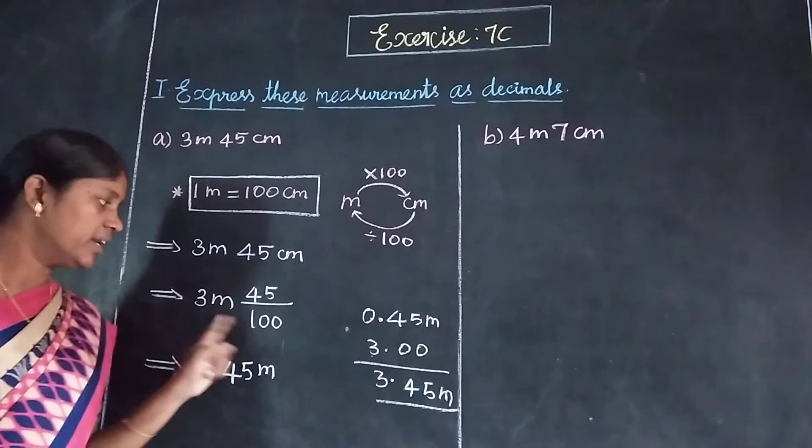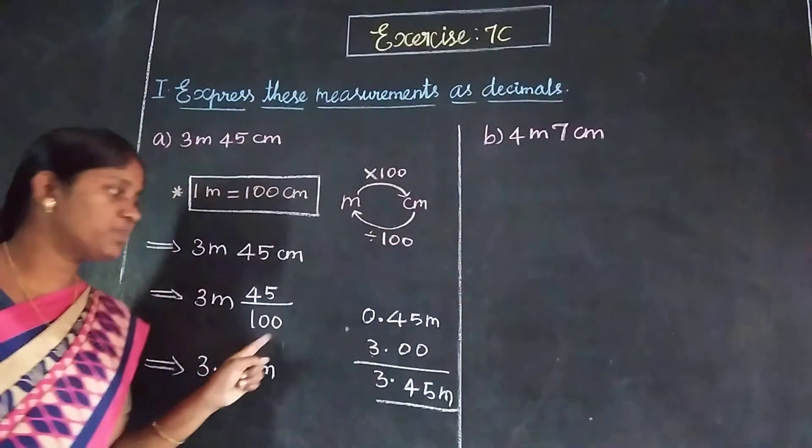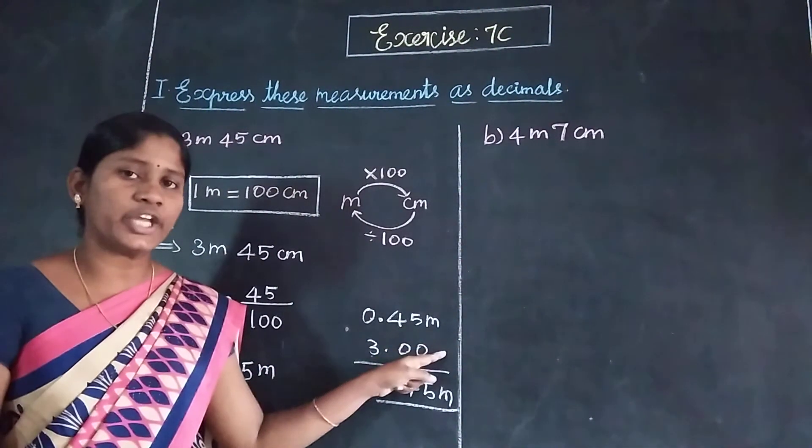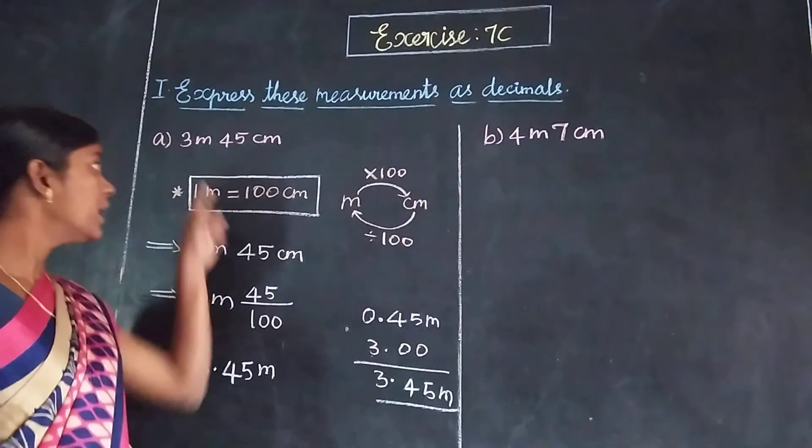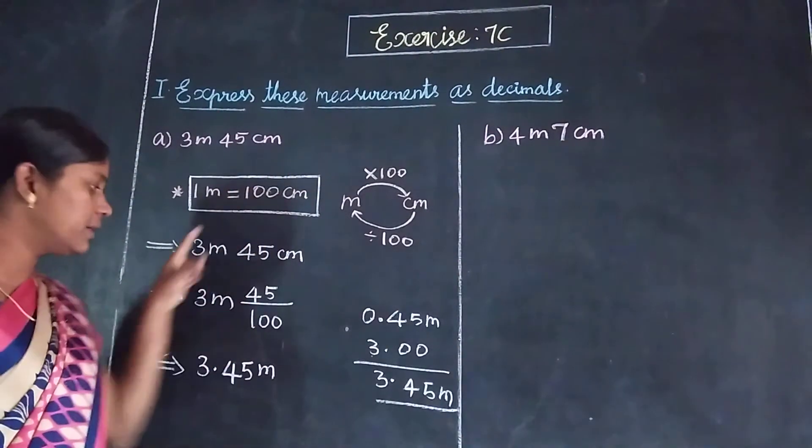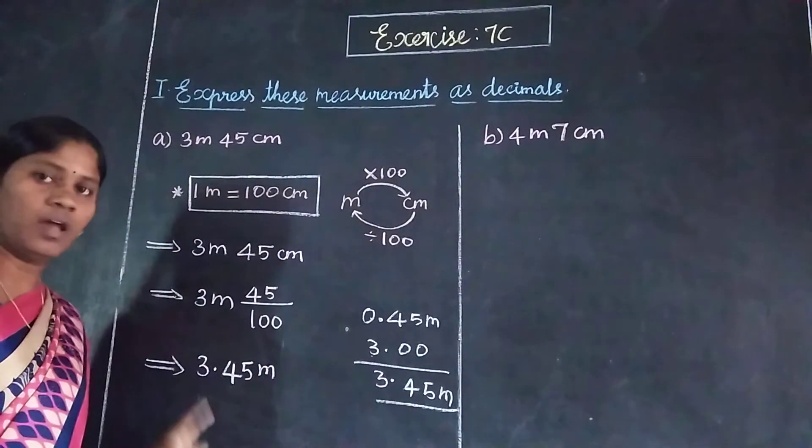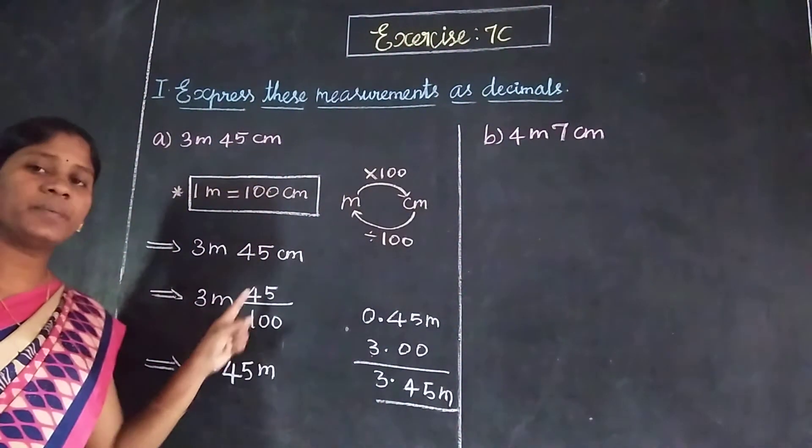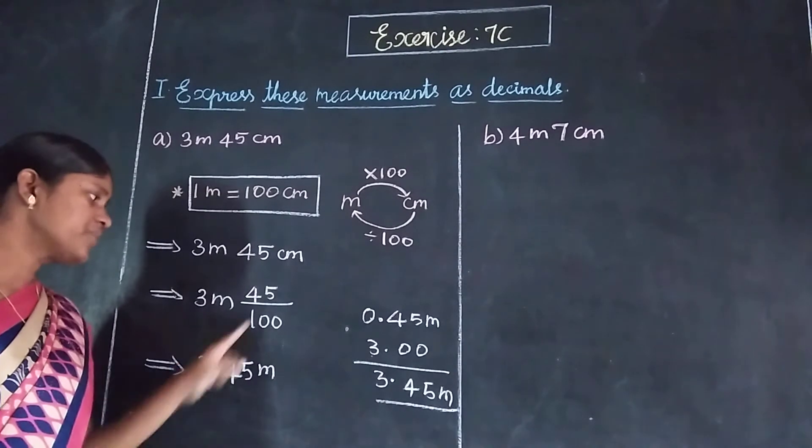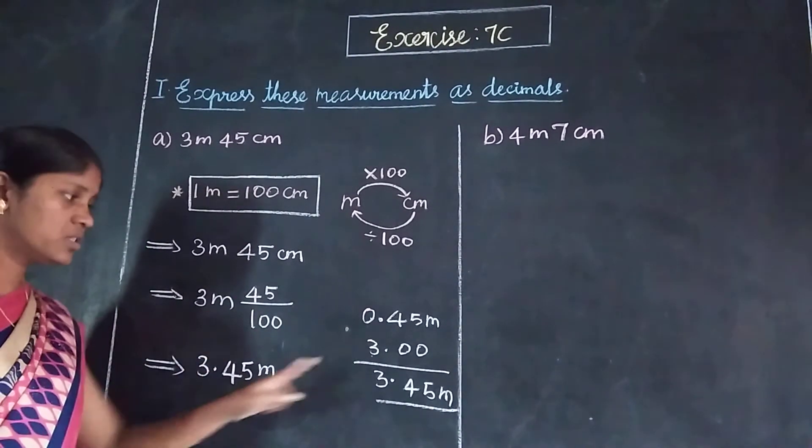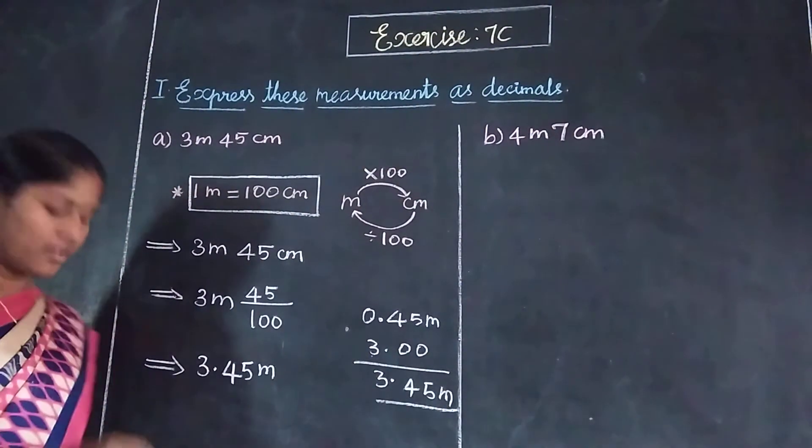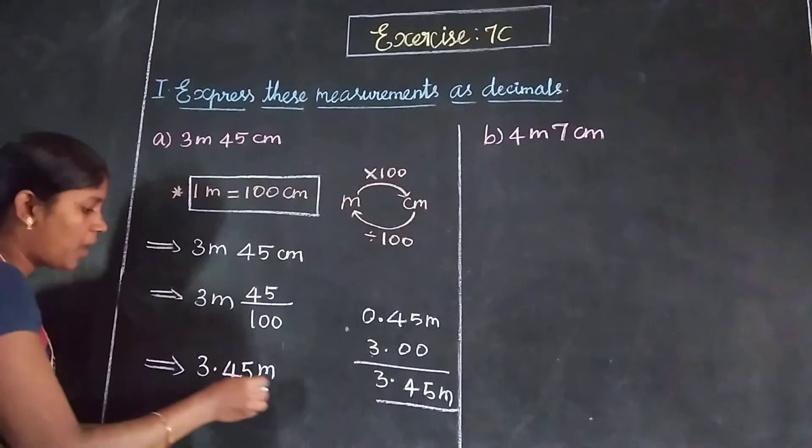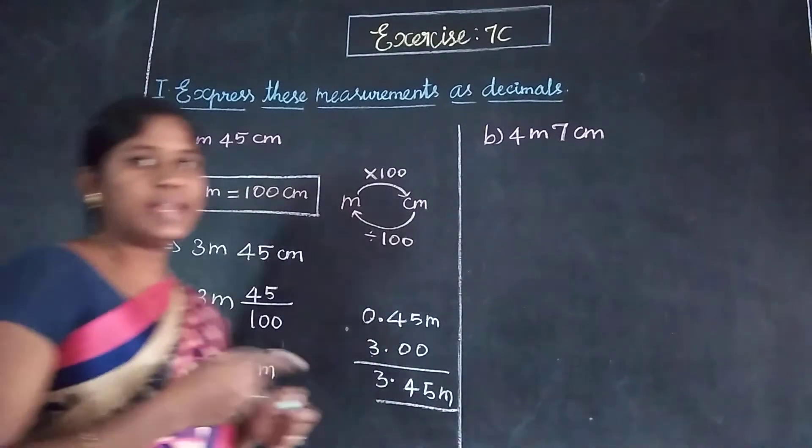3.45 meters is the answer. So 3 meters, then 45 divided by 100 gives 0.45 meters. We add them: 3.45 meters. Meter to centimeter, we can write it directly. 3 meters plus 45 by 100 equals 3.45 meters, the final answer.